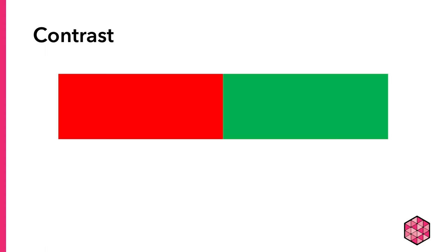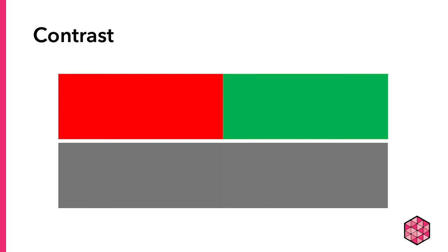One last note on color contrast: a lot of people are tempted to use red and green. This is an issue for accessibility because of red-green color blindness, which is very common. These two colors have the same value — in grayscale they look exactly the same. So somebody who has red-green color blindness would not be able to see that there are two blocks of color on the page. You might need to darken the red and lighten the green to create more contrast. Keep that in mind for accessibility.